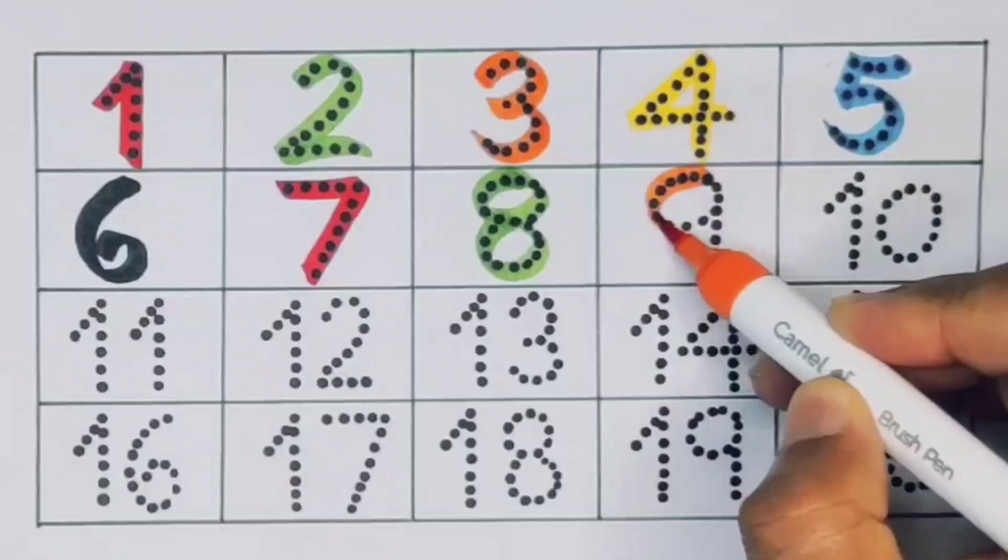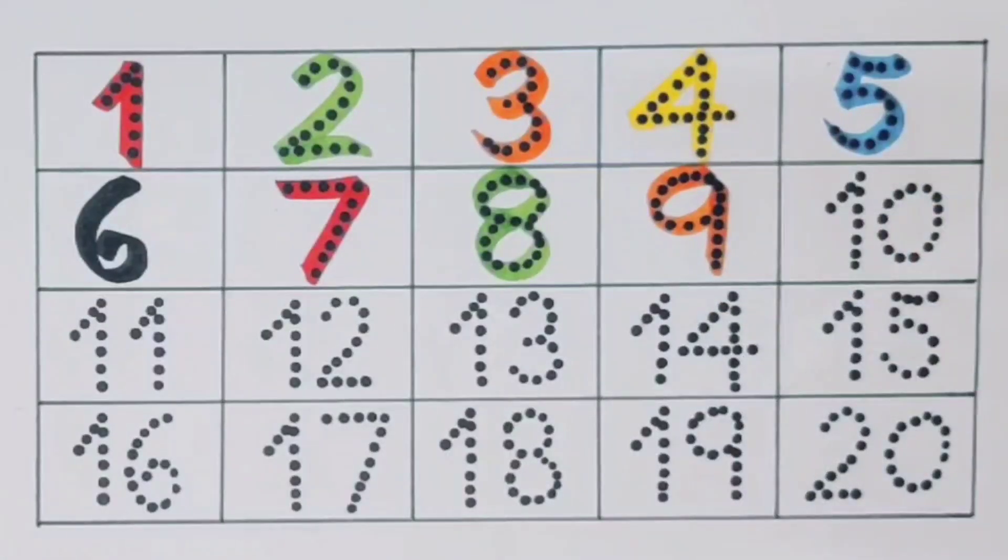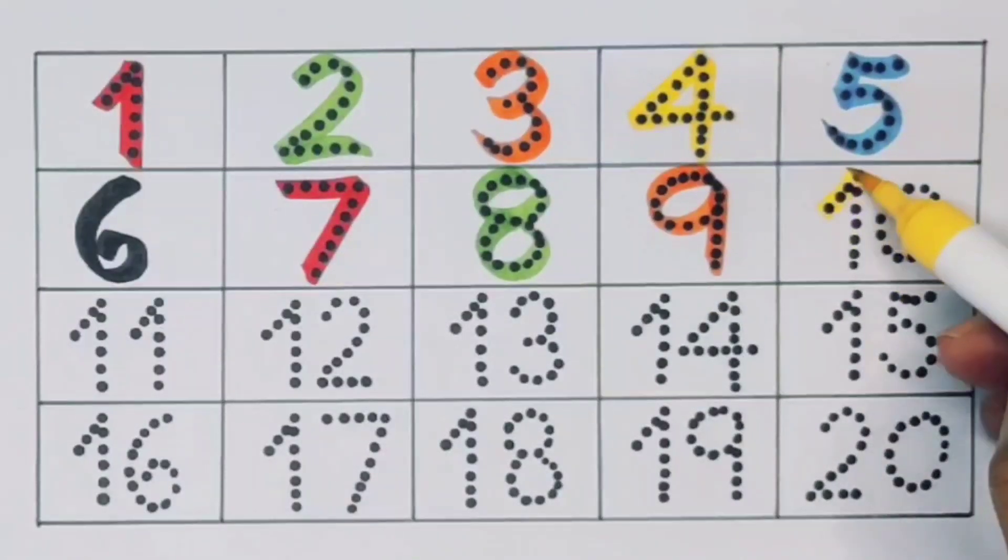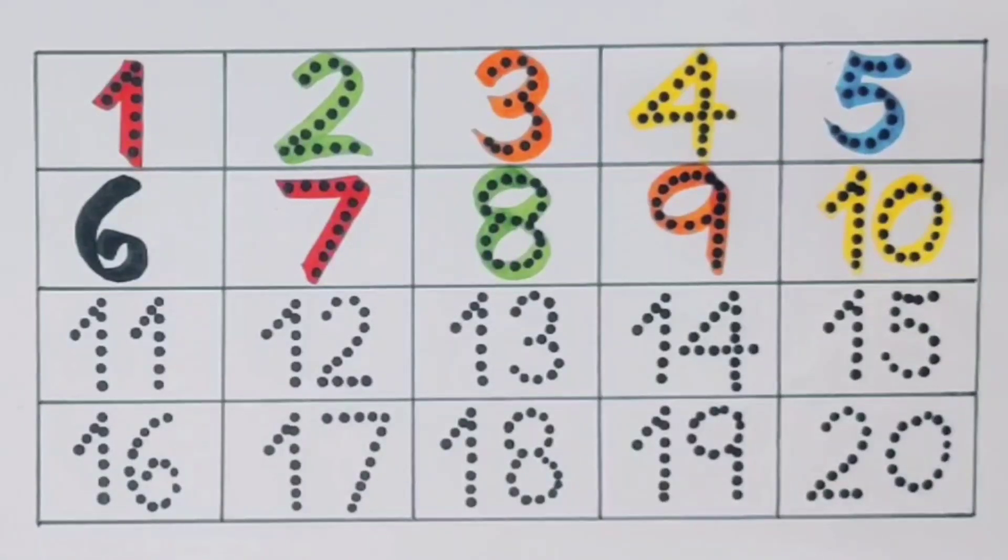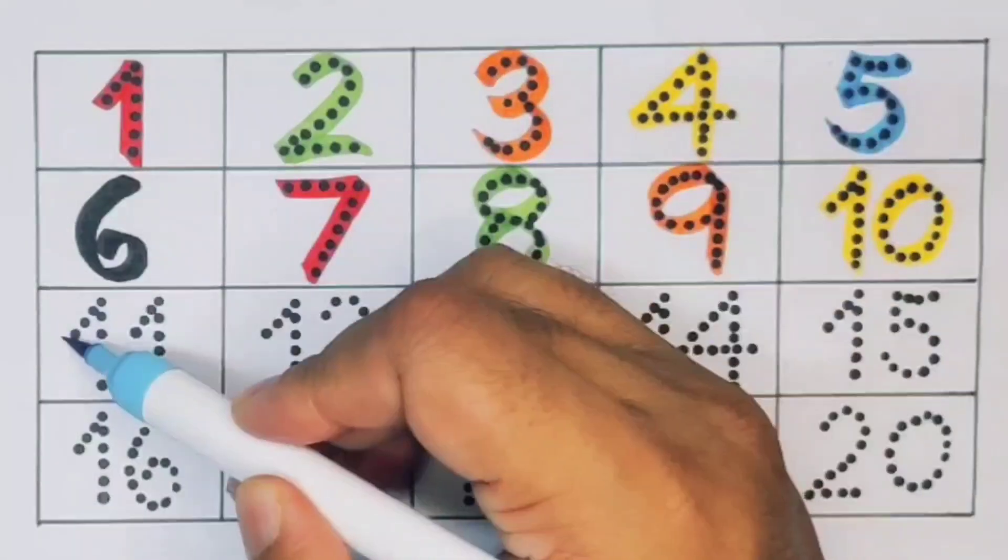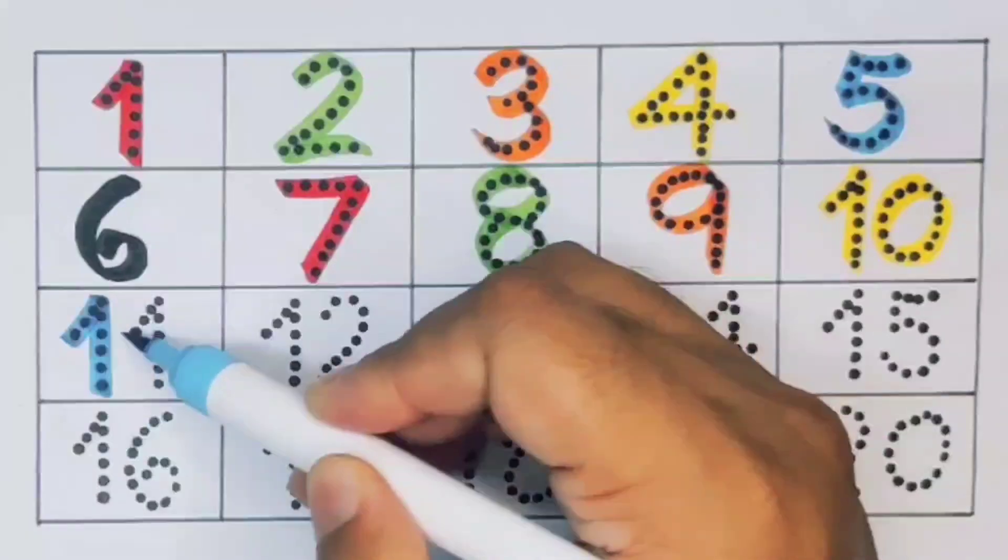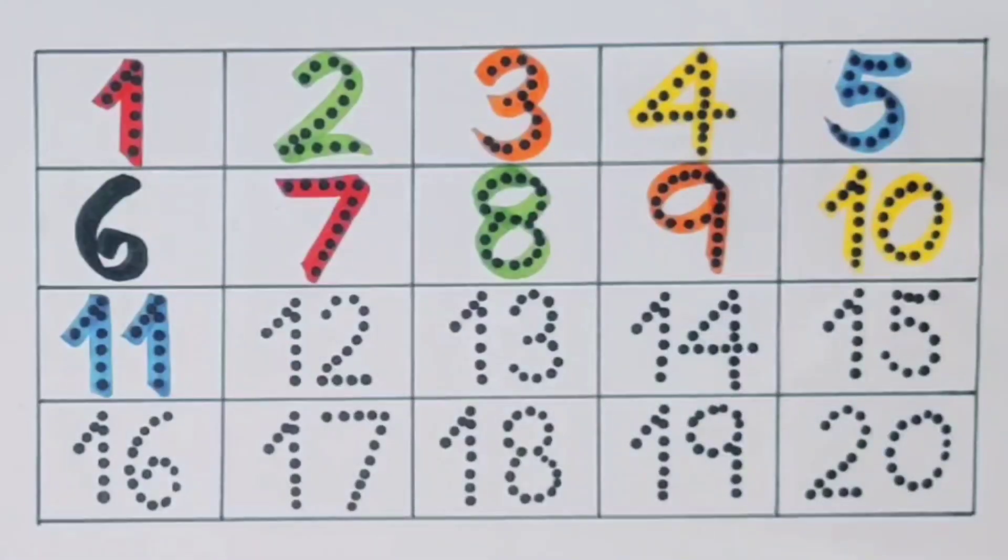Next kids, seven, number seven. Next kids, eight, number eight. Next, nine, number nine. Next kids, ten, one zero, and number ten.